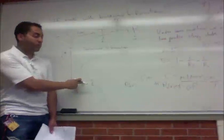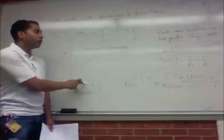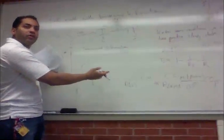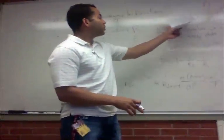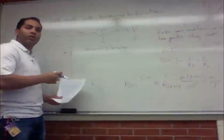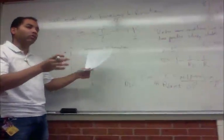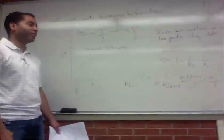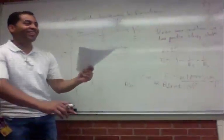So R0 less than 1 doesn't imply that the disease will die out. Now why does this happen? How come we went from here to here, now R0 less than 1? So what's making it more difficult to get rid of the disease? The relapse. Yes, I know you know.